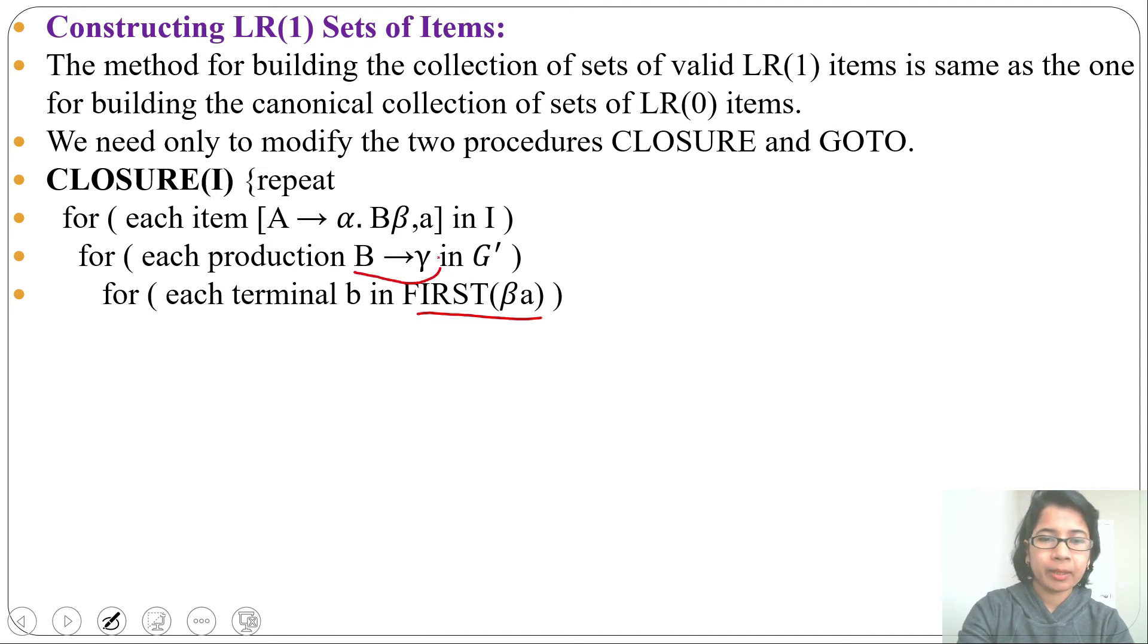We will add this B production as dot is before B, and the lookahead symbol will be FIRST(βa). So we will add the production [B → ·γ, b]. Means we will find FIRST(βa) and we will write this as a lookahead symbol for this B production, B → ·γ. You need to see due to which production you are writing this.